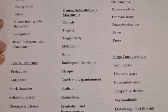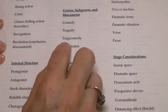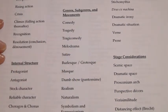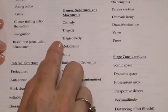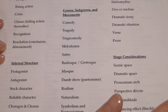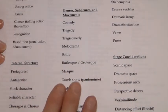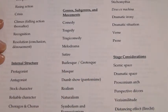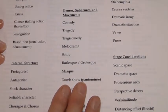Tragicomedy is the blending of the two. It begins as a tragedy — and fortuitously the word does too — but it ends happily. Think of Romeo and Juliet: it begins happily and ends sadly. Melodrama, satire, burlesque, masque, dumb show — these are all words that can be used when talking about Shakespearean theater.